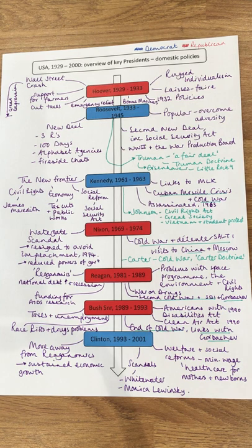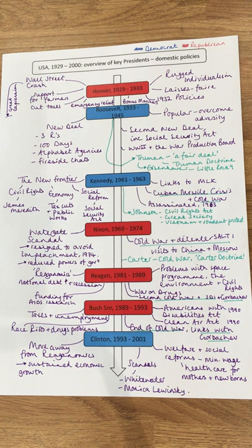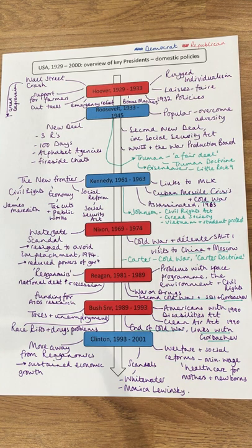In 1932, Roosevelt won an absolute landslide election. He brought a fresh approach to the Great Depression — whilst Hoover had been a successful businessman, Roosevelt gave a whole different outlook. He came across as much more approachable and was very popular because he'd overcome adversity and illness to rise to the office of president. He brought with him a new promise: the New Deal. This incorporates the three R's — relief, recovery, and reform — and across the first hundred days of his presidency the alphabet agencies were set up, fireside chats happened, and all of this helped boost morale and confidence in the government.